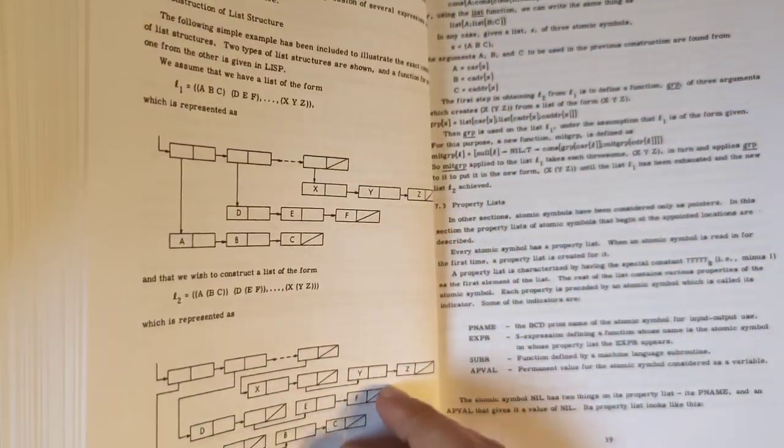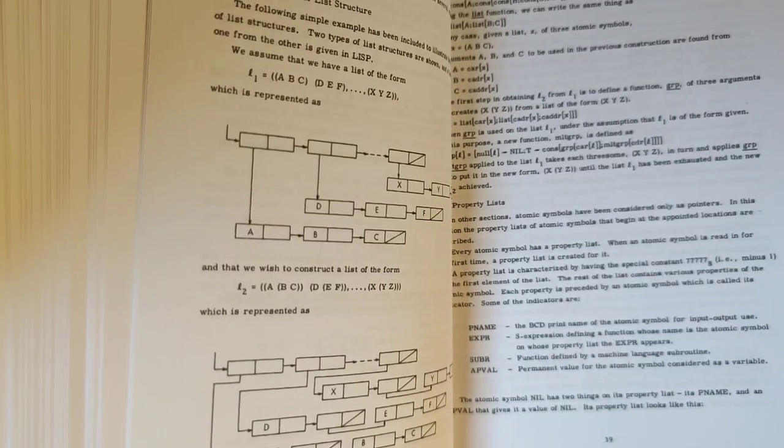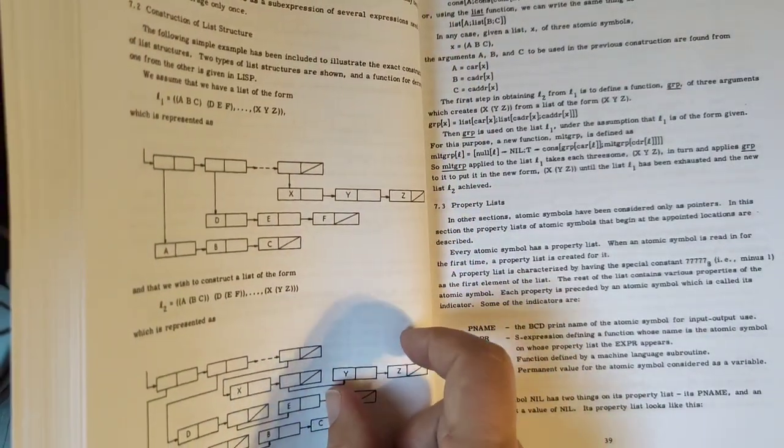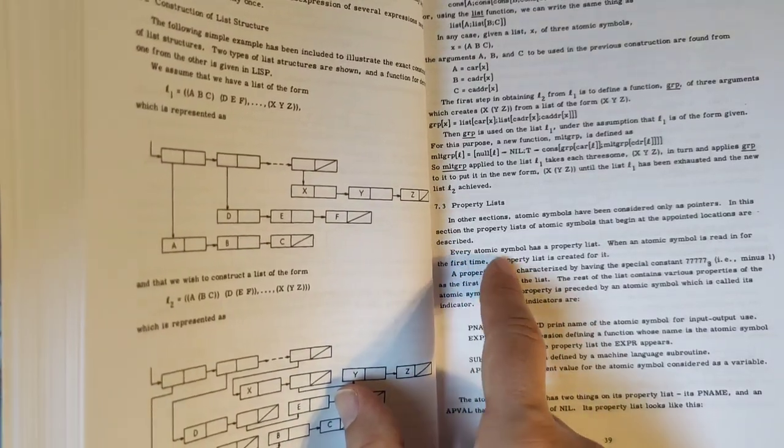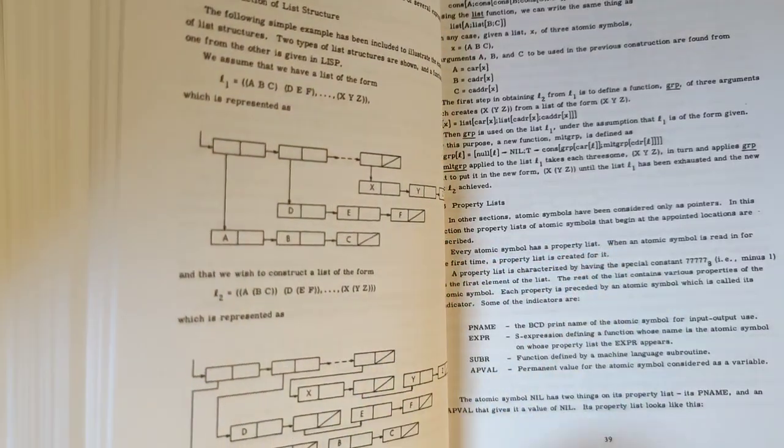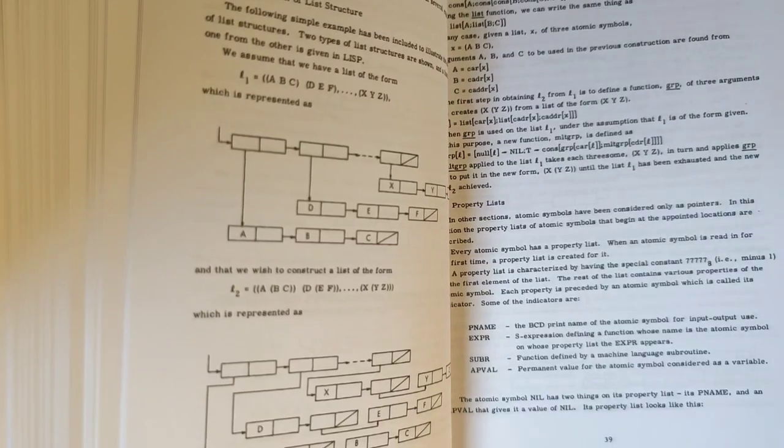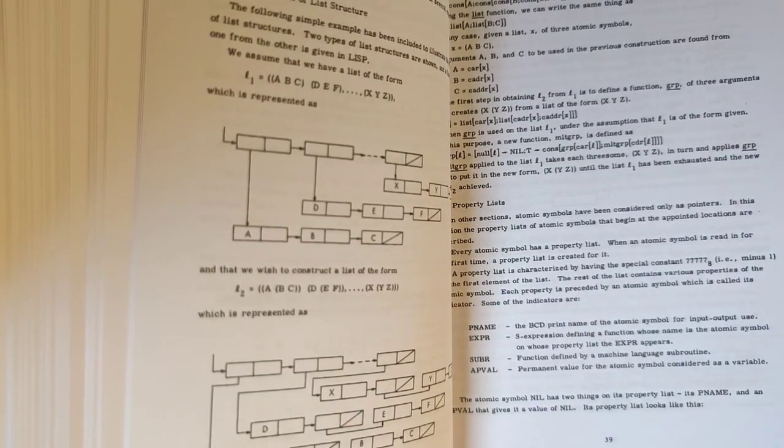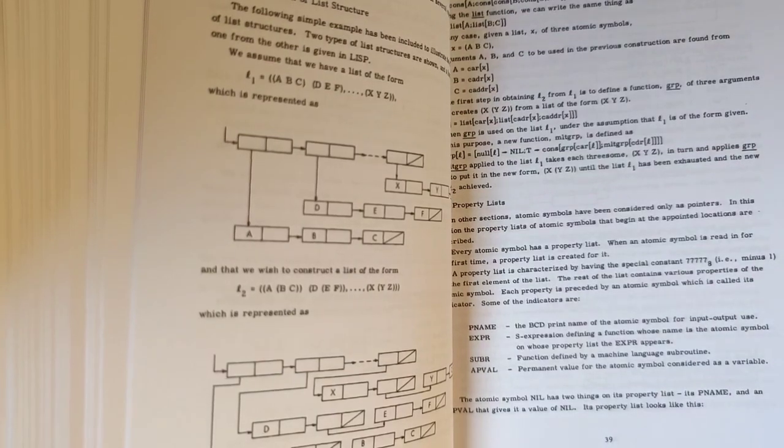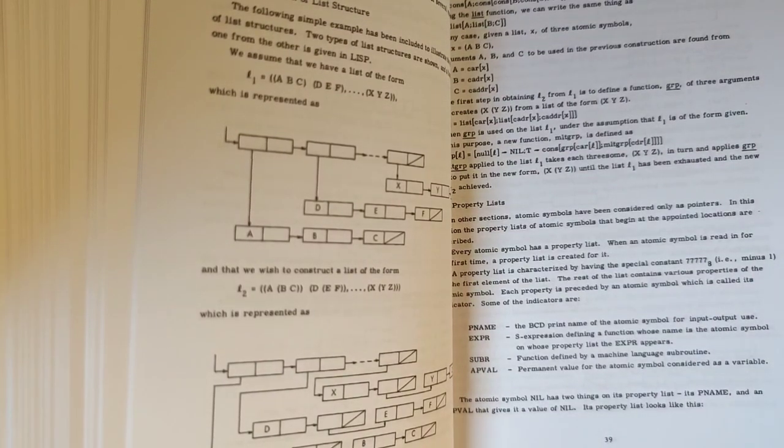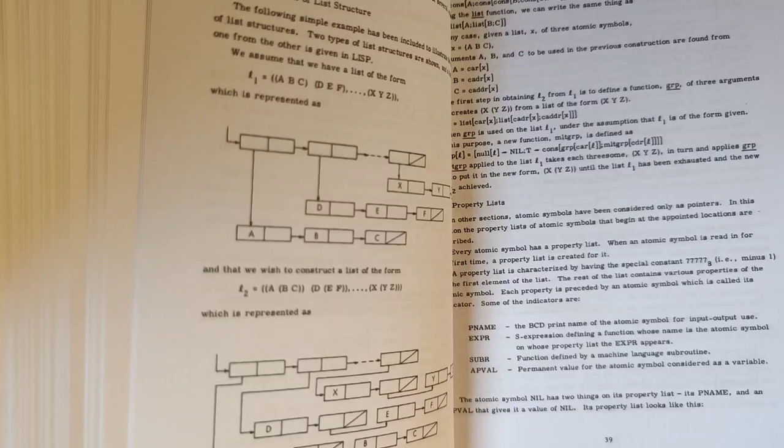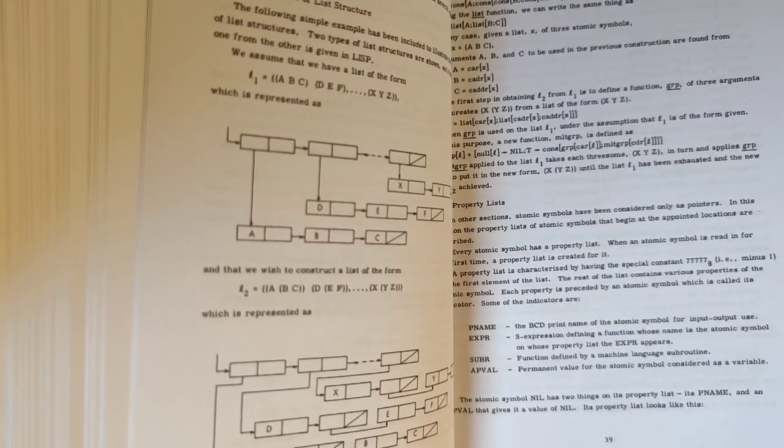Well, then again, page 39, there is this somewhat stepmotherly, or how do you call it, negligent treatment of property lists. And again, they're just not telling you why this is there, and that it comes from IPL 4 and 5 for saying things like that. It just tells you that every atomic symbol has a property list, but why? It doesn't have to have a property list, right? But it does have one. So, like you could solve the things which you are using them for differently, but okay, here it was used that way. We take it as existing.